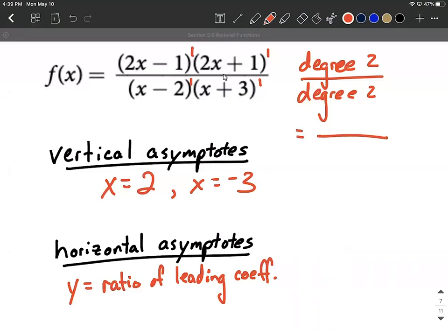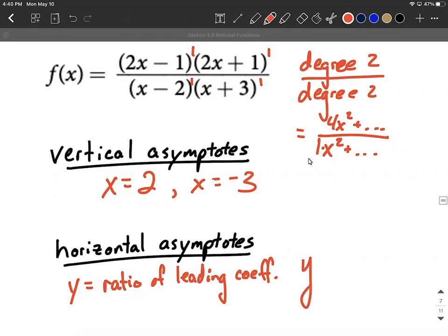If we actually multiplied out our numerator and multiplied out our denominator, for our numerator, we have 2x multiplied by another 2x. So we're going to get 4x squared for our highest power of x, and the leading coefficient of 4. For our denominator, if you were to multiply this out, we're going to get a 1x squared for our highest power of x. We really just care about these leading coefficients as we set up this ratio. So we have a 4 in the numerator and a 1x squared in the denominator. So we can say y equals 4 over 1, or y equals 4 is going to be our horizontal asymptote.